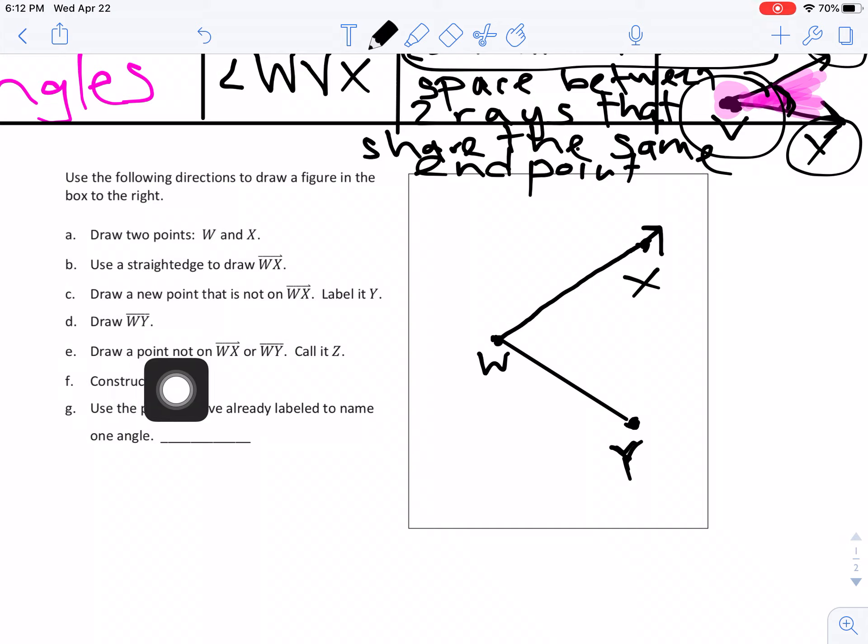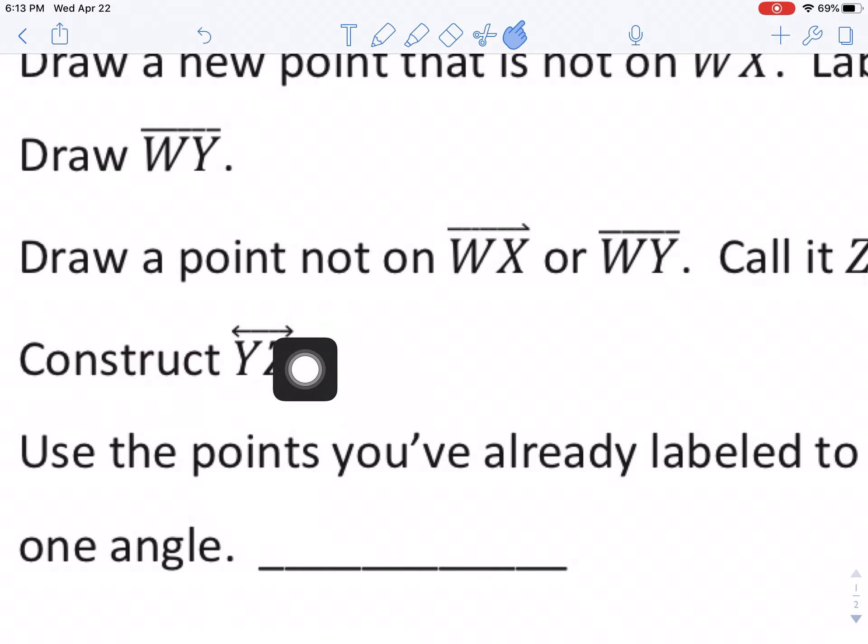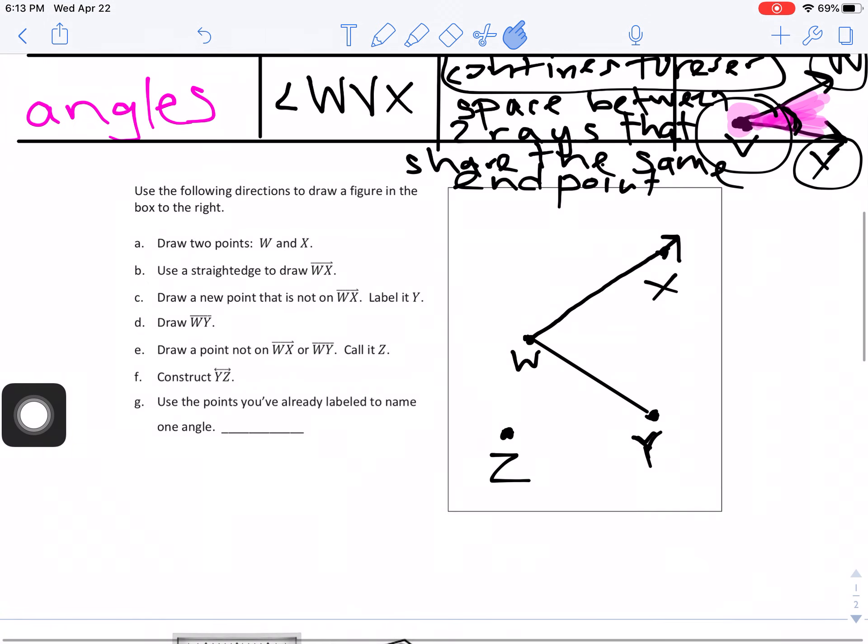Then it says, draw a point not on WX or on WY. Call it Z. So maybe I'm going to come over here. I want to make it a little bigger so we can see it. And now I draw Z. Remember, my point, I can put any direction or any place in my square. So if yours doesn't look like mine, that is perfectly fine. I am going to then construct YZ. And if I zoom in, I see that this is YZ with an arrow in both directions. So it is a line. So I want to make sure that I have arrows in both directions when connecting them. So I'm going to connect them and put arrows in both directions, which means it's going to go out a little past my points.